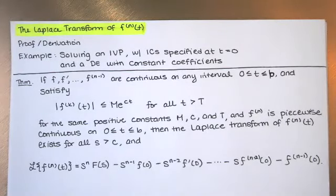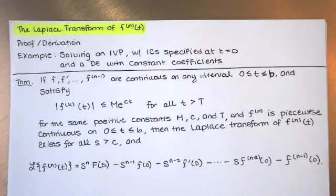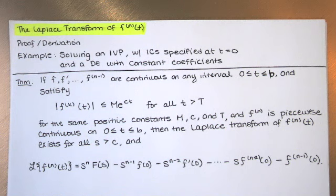In this video, we discuss the Laplace transform of the nth derivative of f with respect to t. We will do the proof or derivation of the formula in the theorem, and then use the Laplace transform of the nth derivative to solve an initial value problem. That's typically what we use the Laplace transformation for — to solve IVPs where initial conditions are specified at t equals zero. We'll focus on the case where the differential equation has constant coefficients.